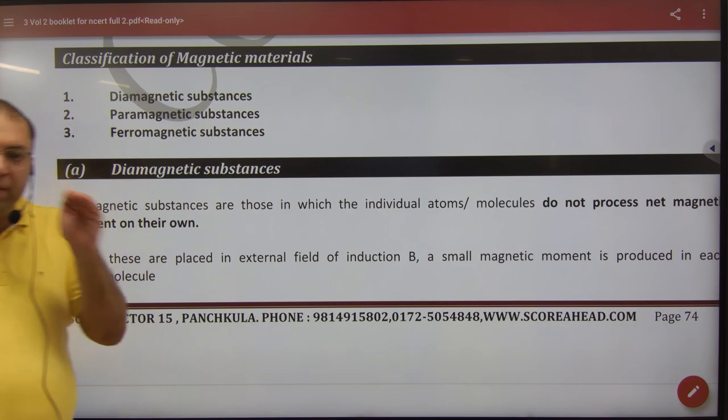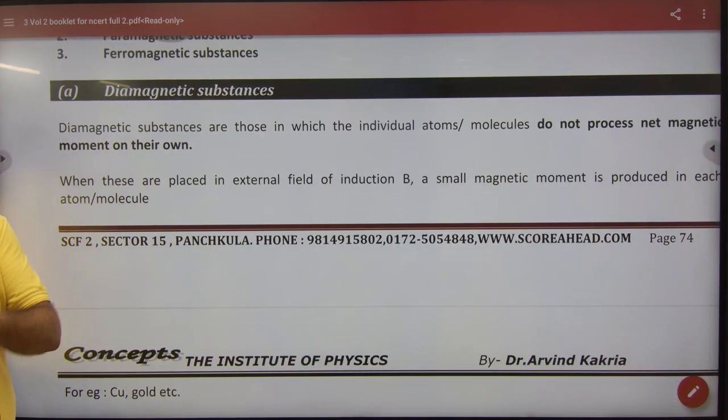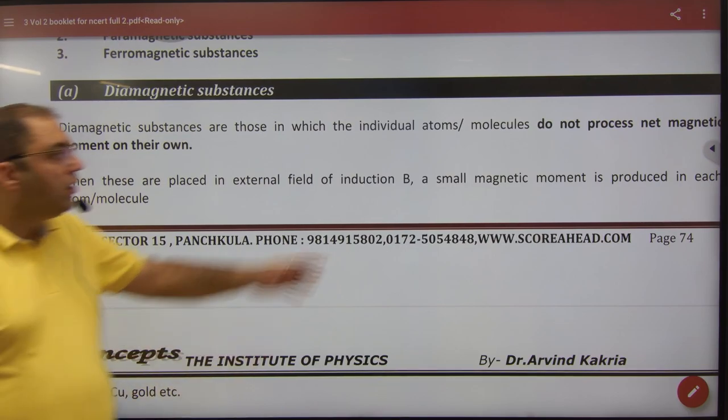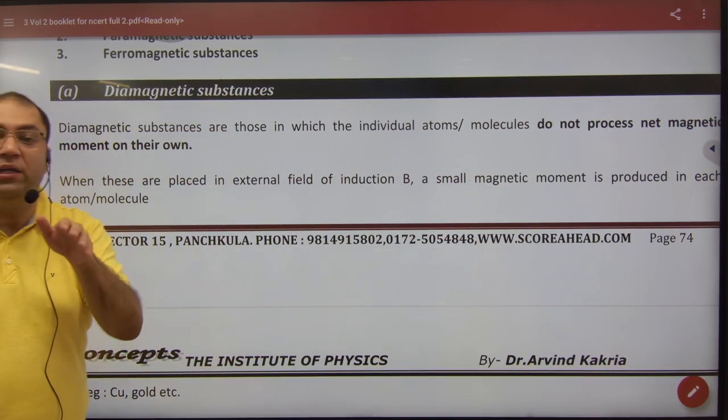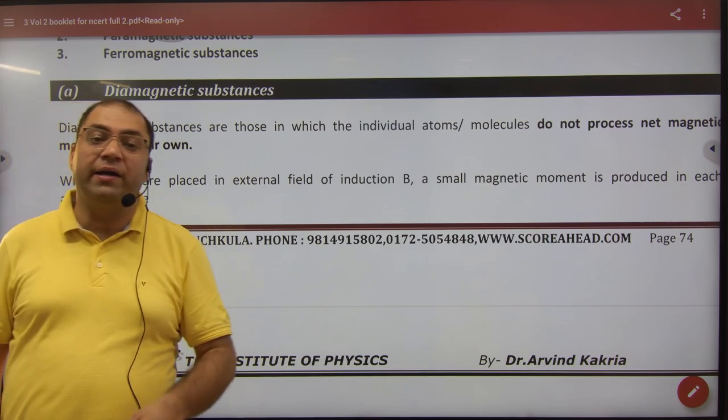What are Diamagnetic Materials? Diamagnetic substances are those substances which individual atoms do not possess net magnetic moment of their own. They do not act like a magnet. So the question arises that if there are one crore atoms and they do not have a magnet, then how did the diamagnetic substance become magnetic material?